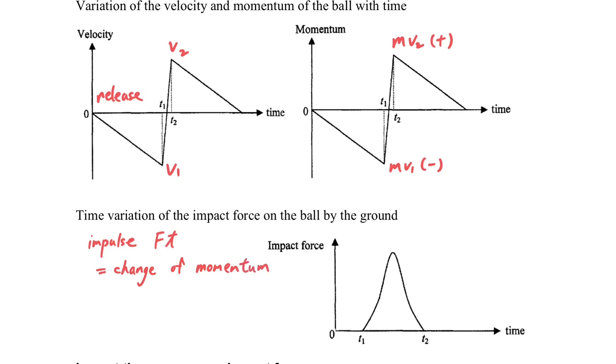If we consider the equation F equals mv minus mu over t, the F times t will just be equal to mv minus mu.